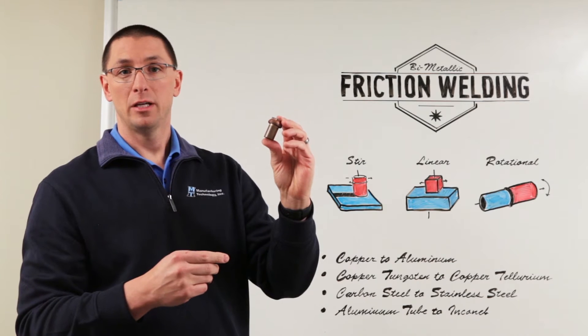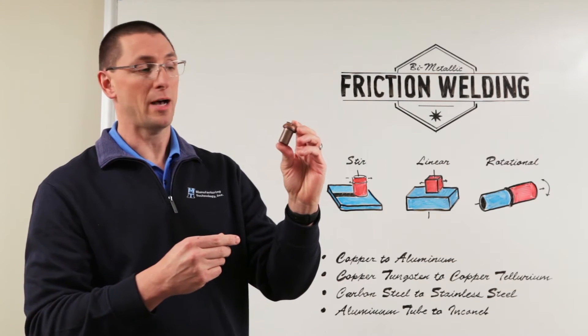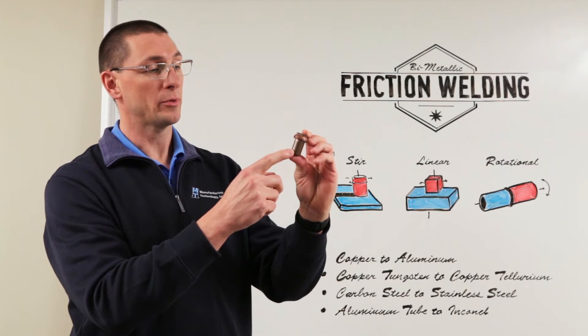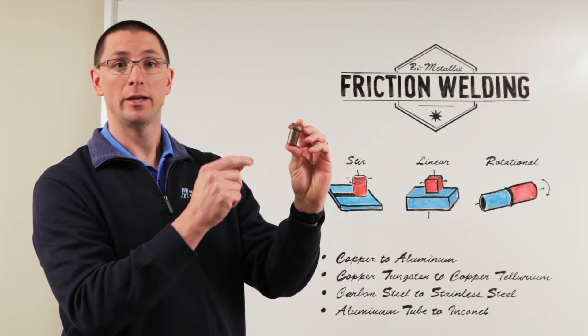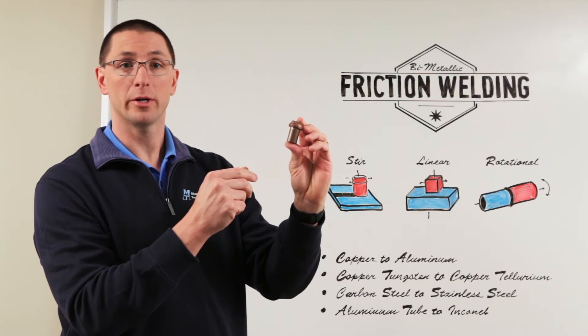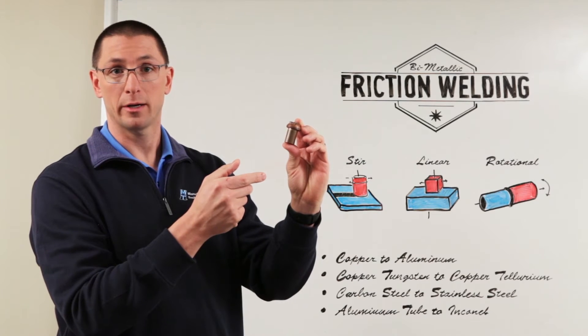For electrical conductivity we can use two different types of copper. You have a softer copper alloy which is much less expensive welded to a harder copper alloy, and you only put that hard copper alloy where you need it, where there's going to be wear characteristics.